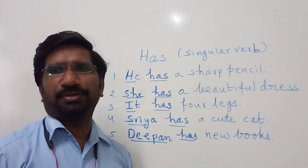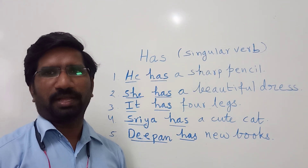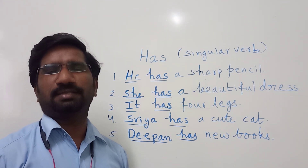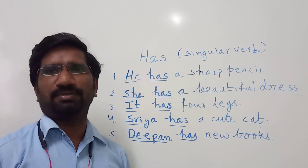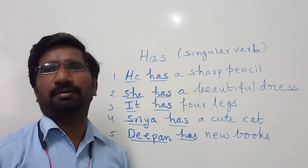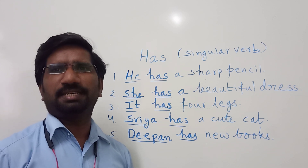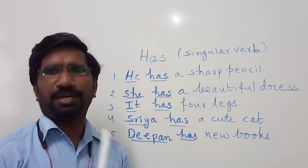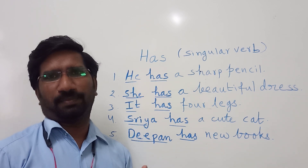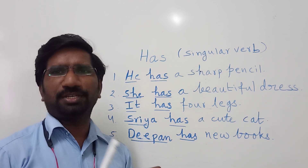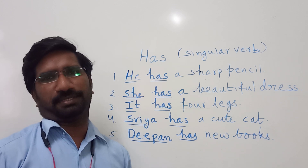Dear friends, we are going to talk about 'has' today. Has is a singular verb. It is used for singular nouns and singular pronouns. What are the singular pronouns? He, she, it. So has is used for only singular persons.